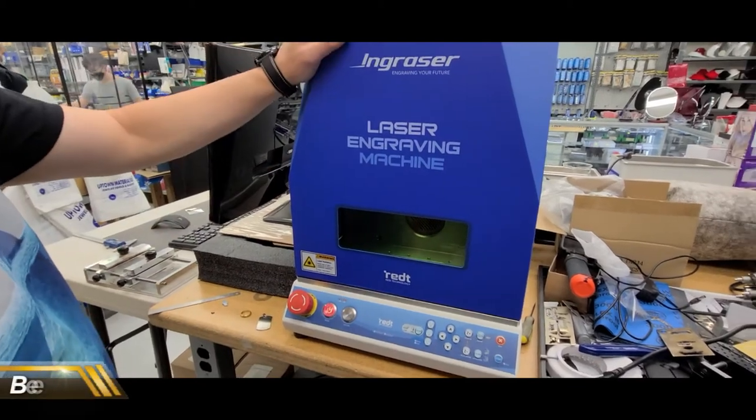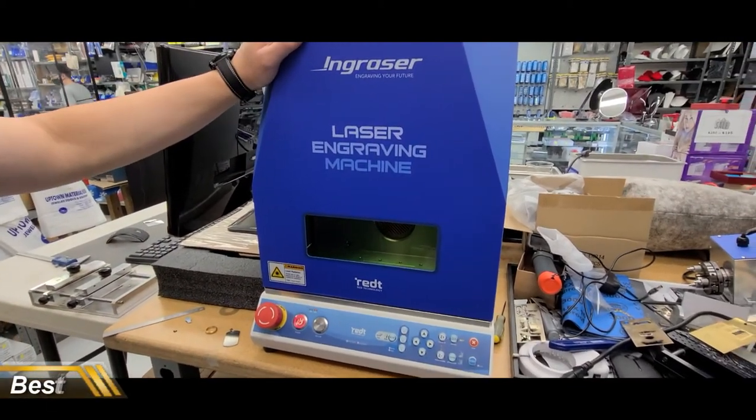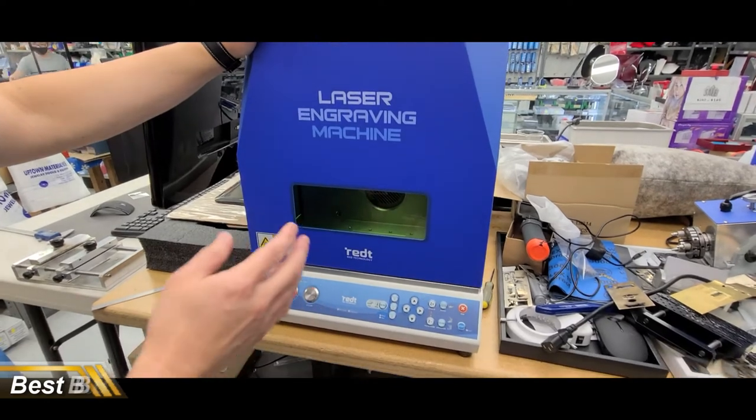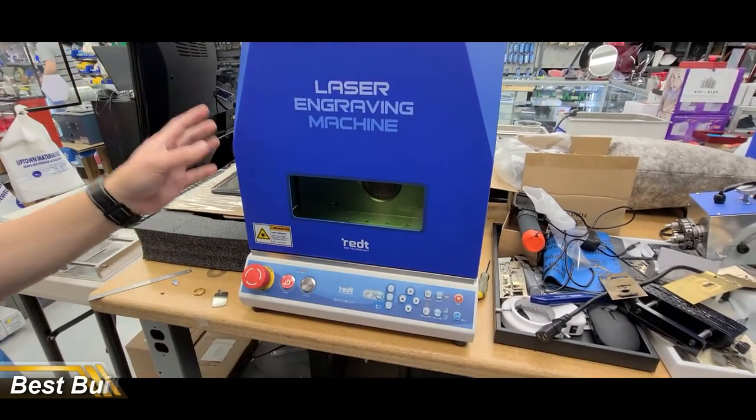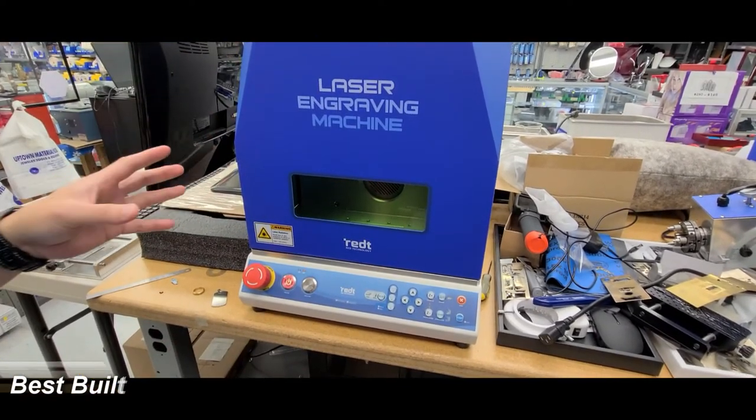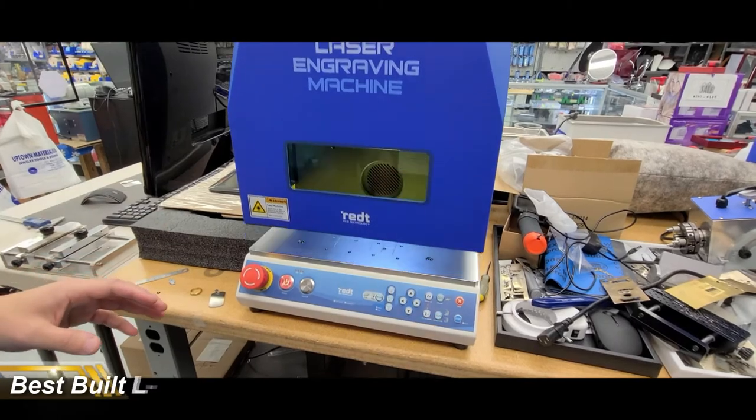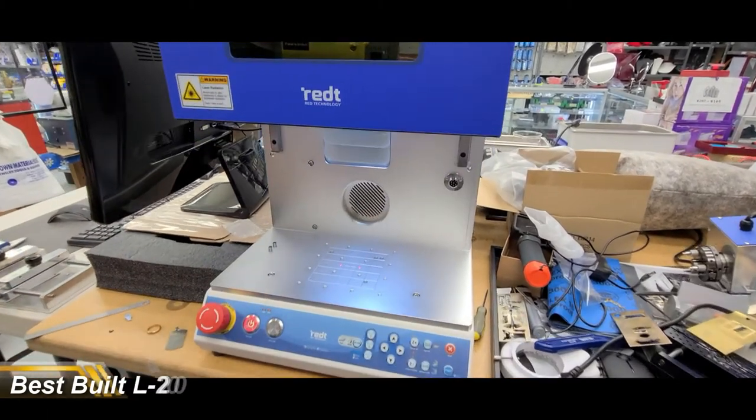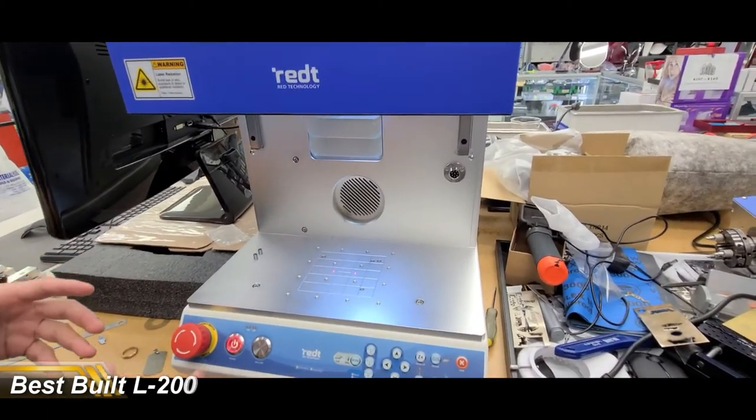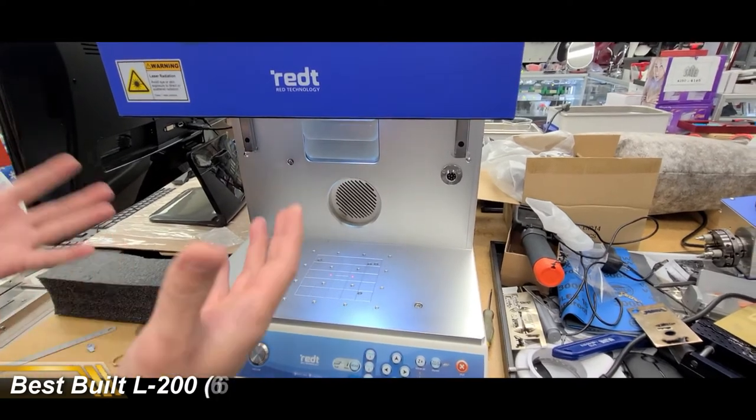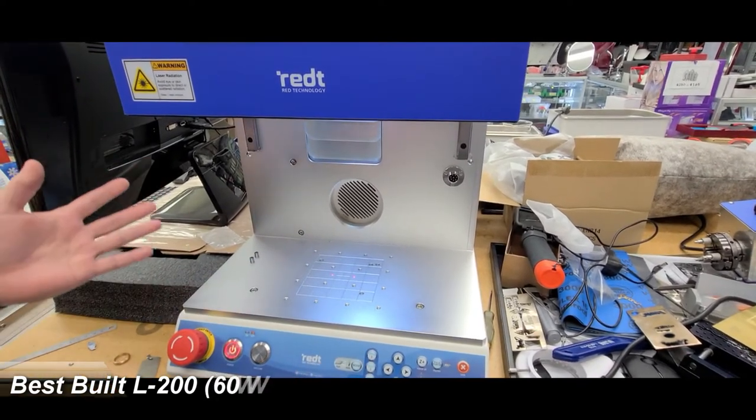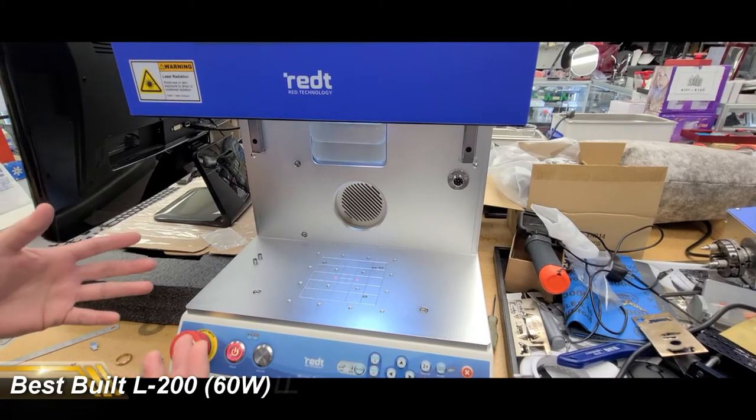This is our newest entry, the L200 60 watt fiber laser cutting and engraving machine from Best Built. It has all the features of the L100 except the power is exponentially almost three times stronger than the 30 watt.